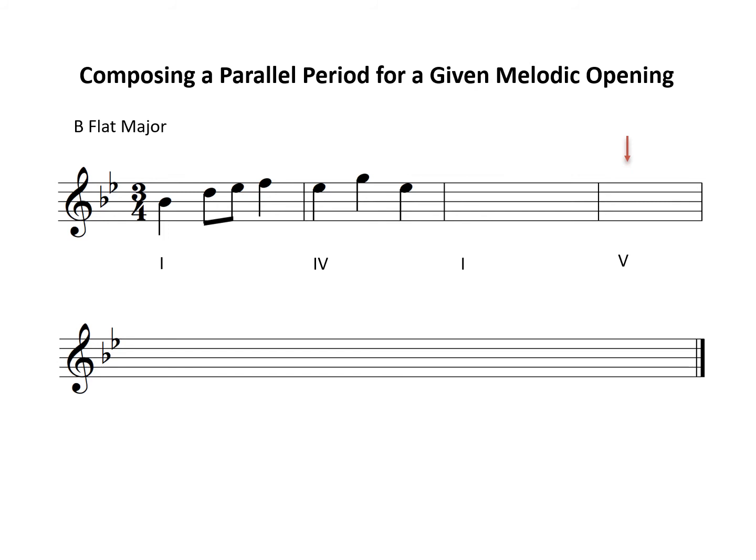I'm choosing to use scale degree 7, which is A. Next, write the last note of bar 3 with a note of the tonic chord that will step to it. The notes of the tonic chord are Bb, D, and F, and so I'm going to use Bb, which is a step above A.